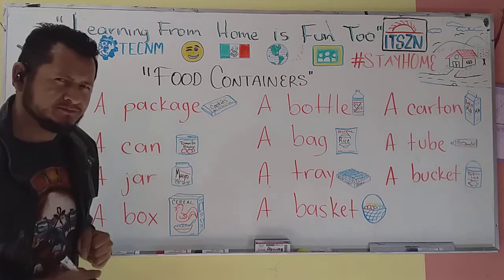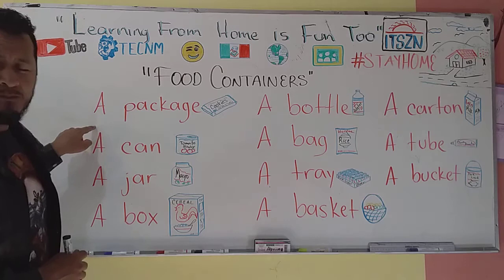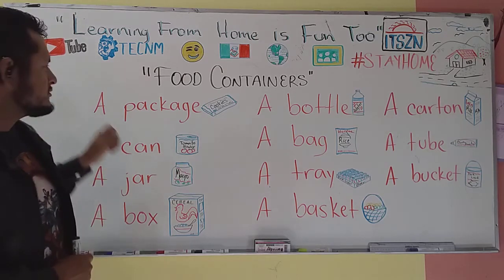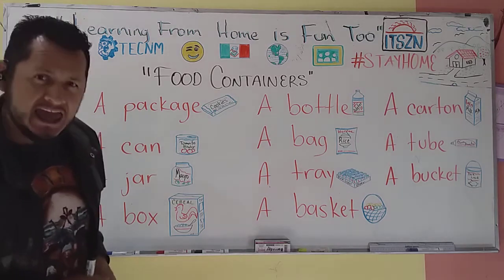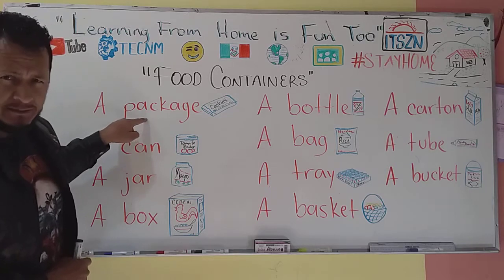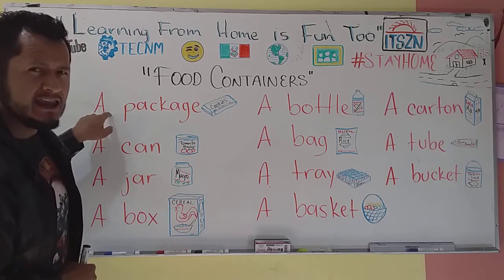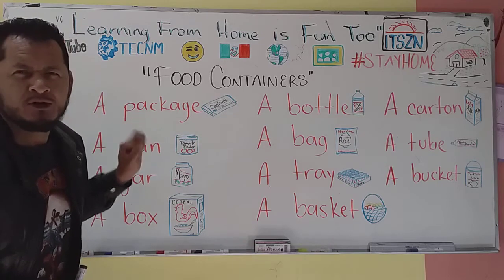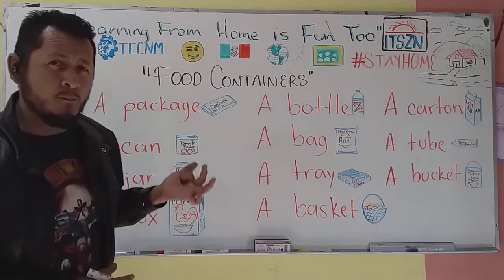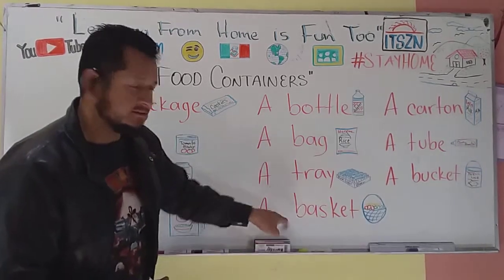A package — así se dice. It has the letter A, porque A significa uno o una, ¿verdad? Por lo tanto, vamos a todos a ponerle la letra A — uno o una. Si mi sustantivo empezase con vocal, entonces lleva AN. Pero no es muy común encontrar food containers que empiecen con vocal, por eso todos tienen la letra A, porque empiezan con consonant.